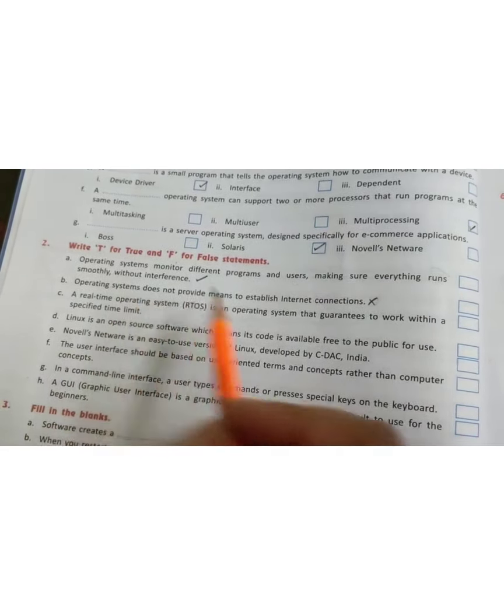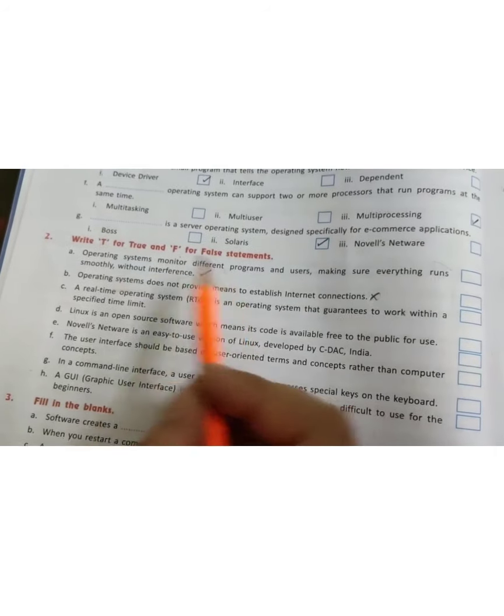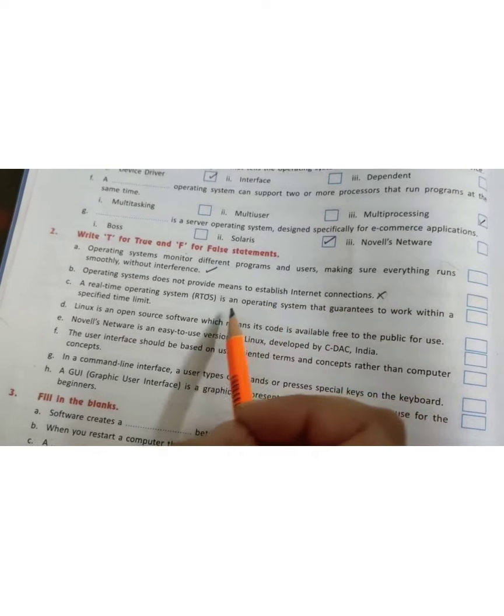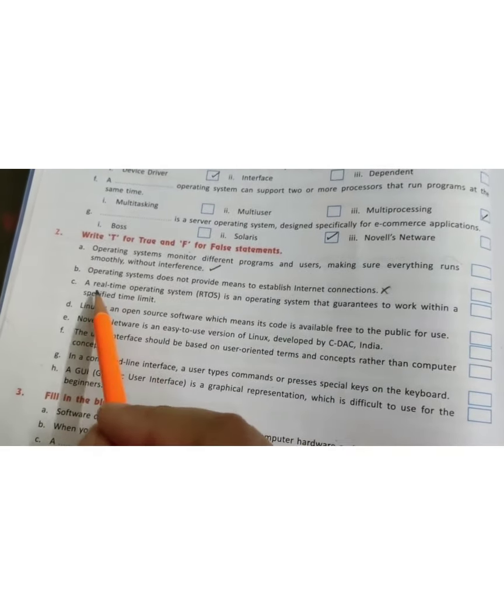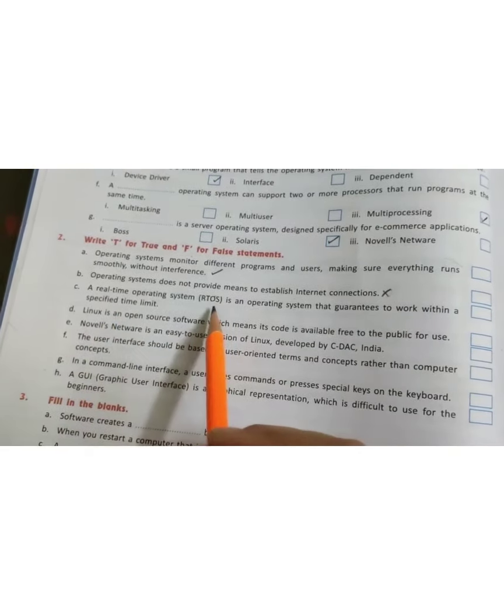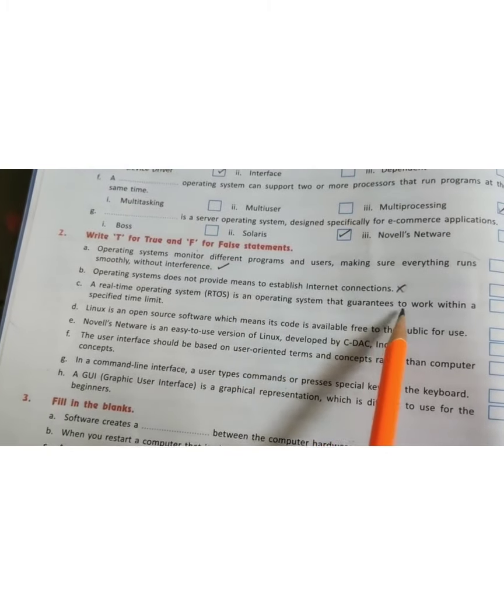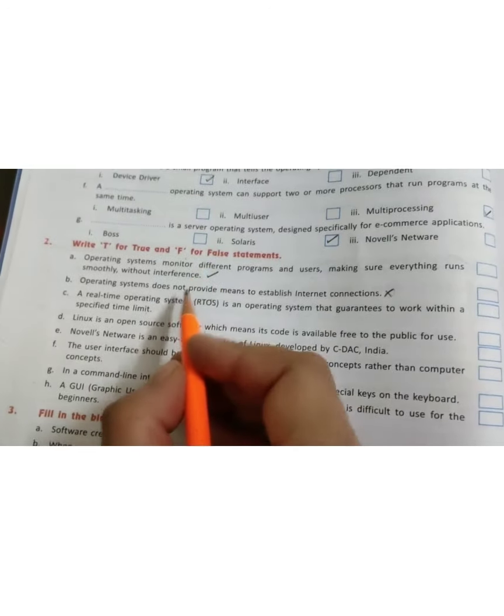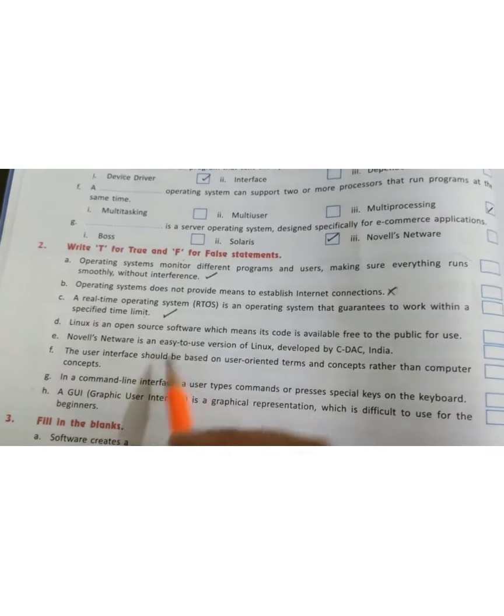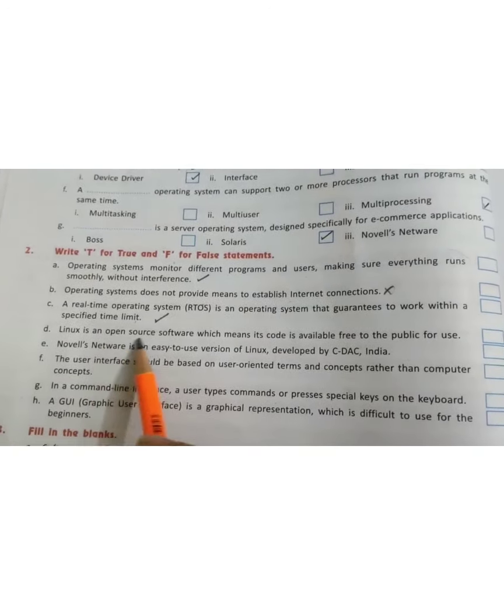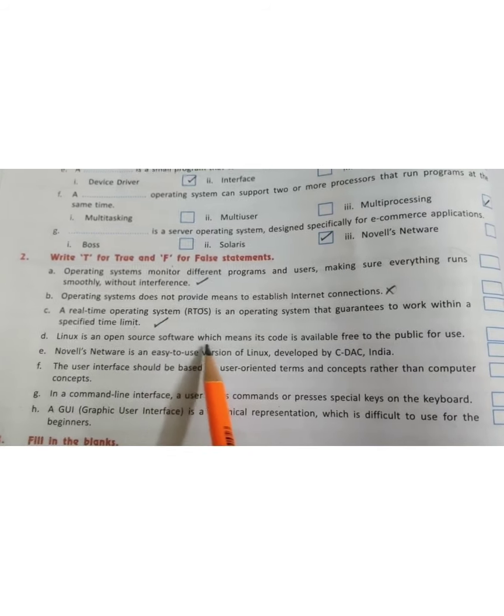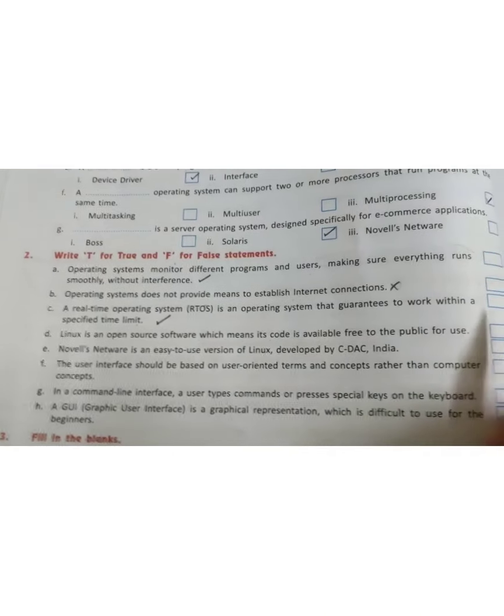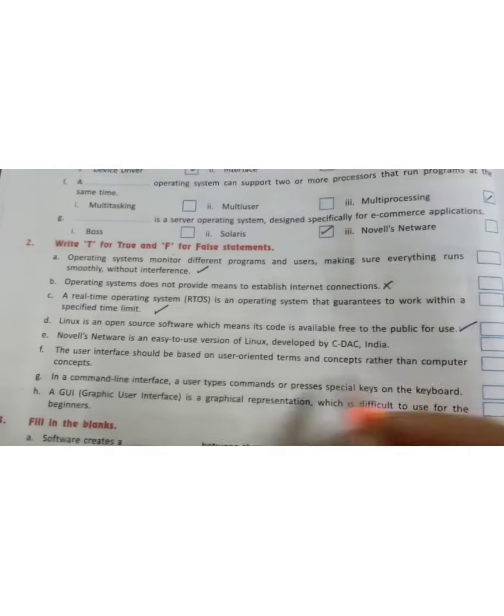Correct statement will be operating system provides or operating system helps you to establish internet connection. Next we have, a real-time operating system is an operating system that guarantees to work within a specified time limit. This is also true. Linux is an open source software which means its code is available free to the public for use. This is also true.